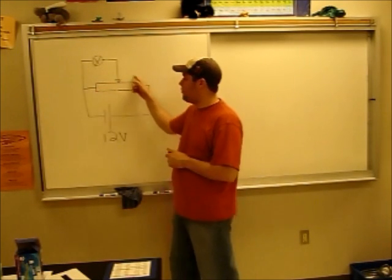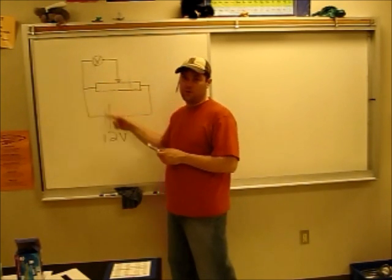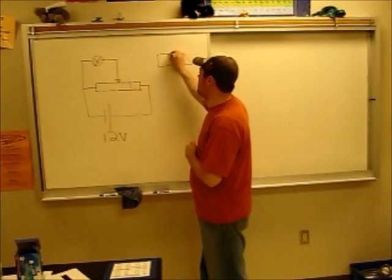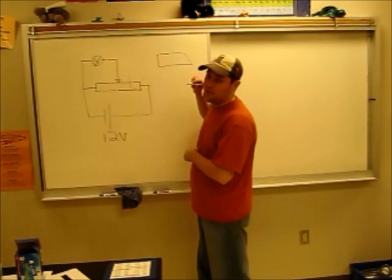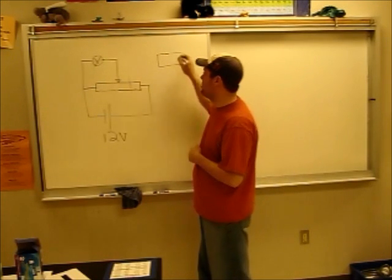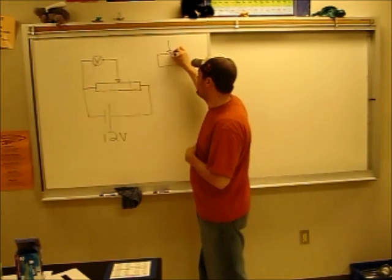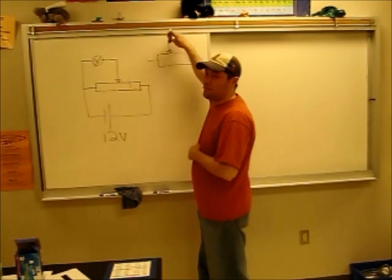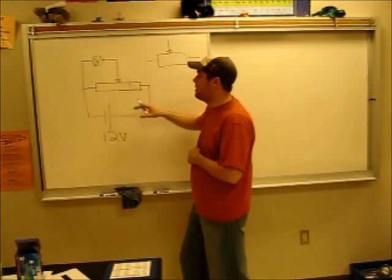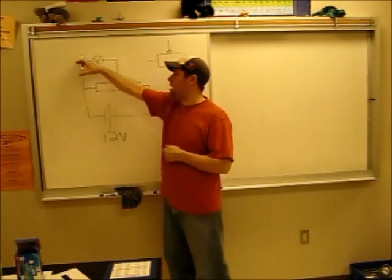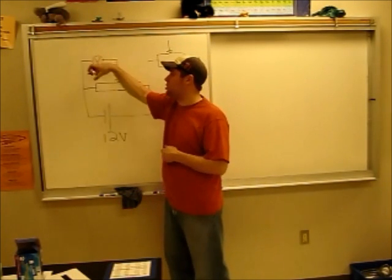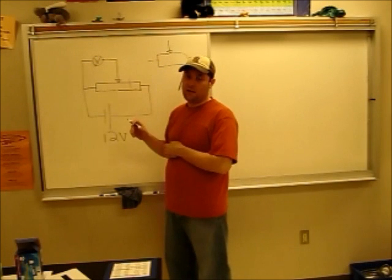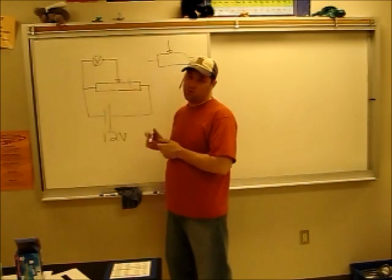This right here is the symbol for a potentiometer. In your IB data booklet, it looks something like this, where they just have an arrow coming down. But it actually has a circuit, and then the arrow comes down and points to a certain part.